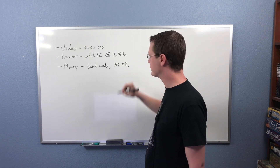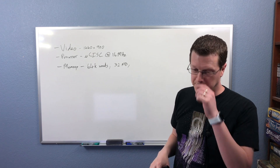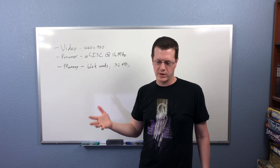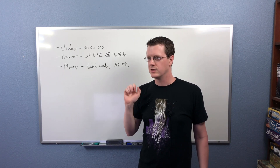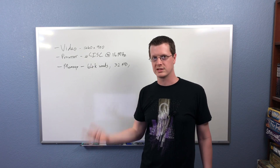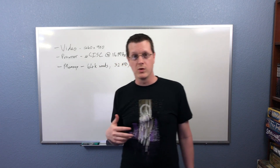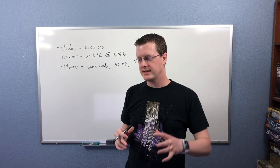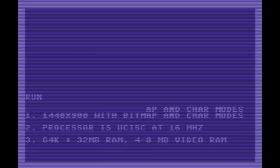We also want dedicated video memory. At 1440 by 900 — roughly 1.3 million pixels — with 16 bits of color, that doubles to about 2.6 megabytes just to hold the screen RAM. We'll also need memory for character mappings and extra video data, so I'm estimating we'll end up with 4 to 8 megabytes of bankable video RAM. I'll cover how the banking system works in other videos — it's actually really simple.